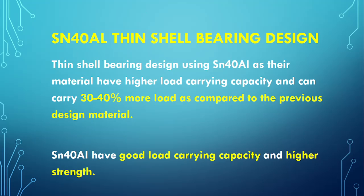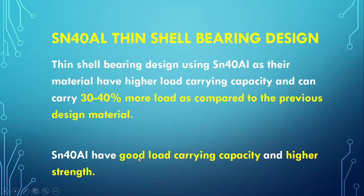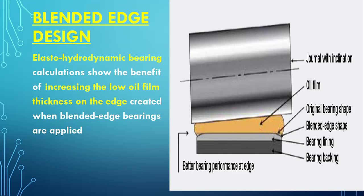Now we will talk about the SN40L thin shell bearing design. The SN40L thin shell bearing is basically a thin aluminium design which has a higher load carrying capacity and can carry 30 to 40% more load compared to the previous material. The bearing material has been improved to carry more load, increasing the overall load carrying capacity and strength, allowing the bearing to handle greater loads.